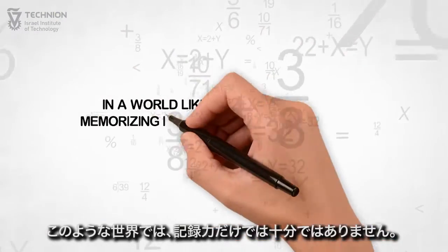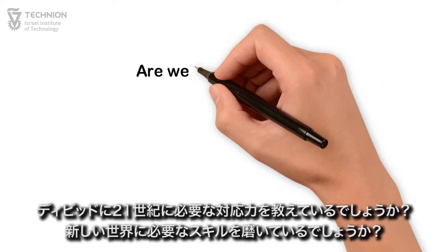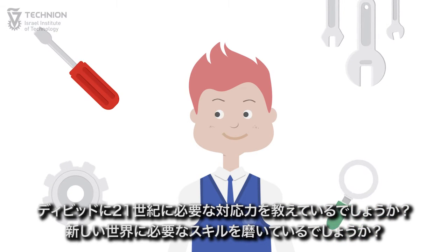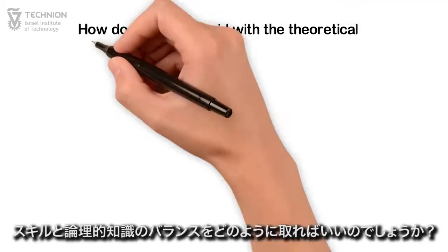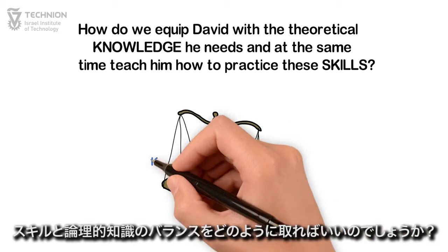In a world like this, memorizing is not enough. Are we preparing David for the 21st century? Are we honing the skills he needs for this new world? How do we equip David with the theoretical knowledge he needs and at the same time teach him how to practice these skills?